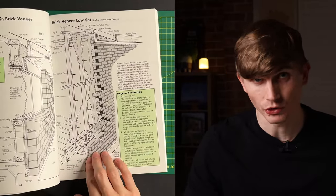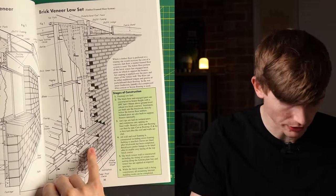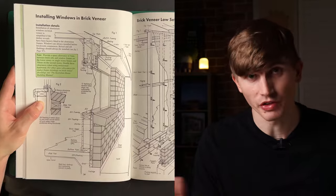We've got a low set brick veneer covered here where it's bearers and joists on an enclosed subfloor, and we're showing everything here. We've got the brick ties all the way down to the ventilators, the vermin proof mesh.